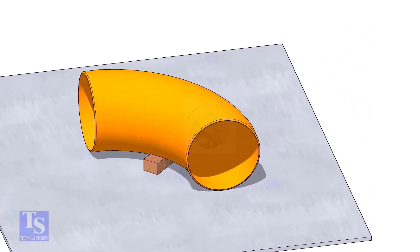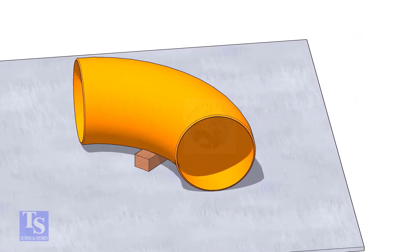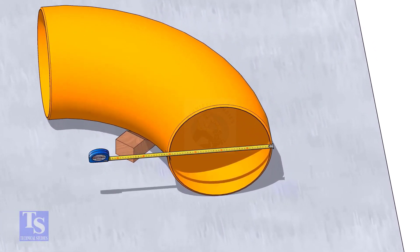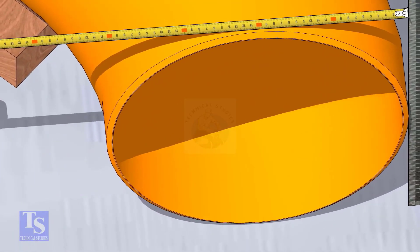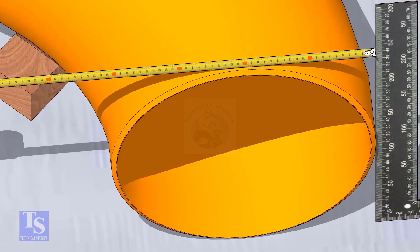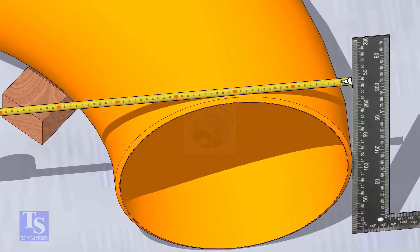I am going to mark the center of a 16 inch elbow. The outside diameter is 406 millimeters. Put a right angle at the side of the elbow, touching the side smoothly, and mark 203 millimeters on the top side of the elbow.